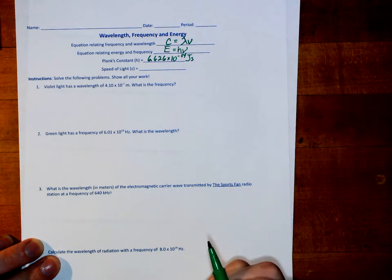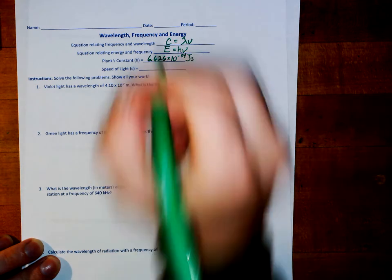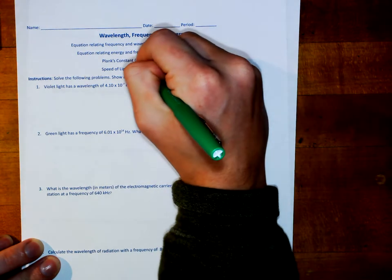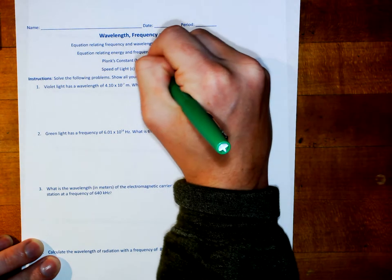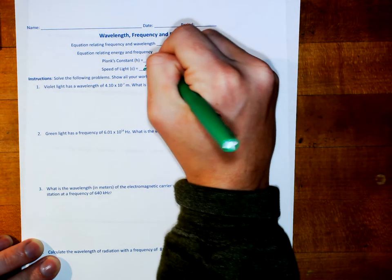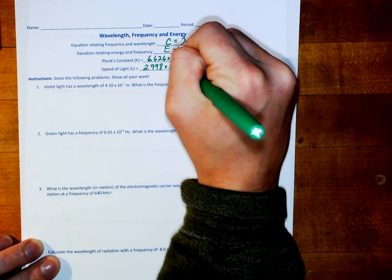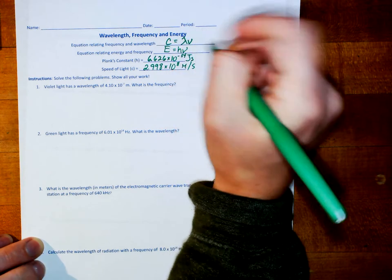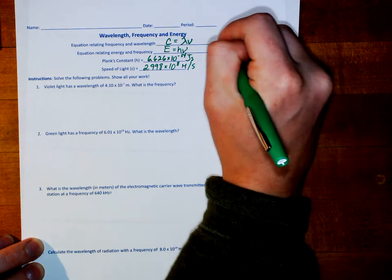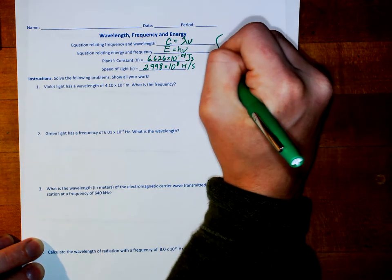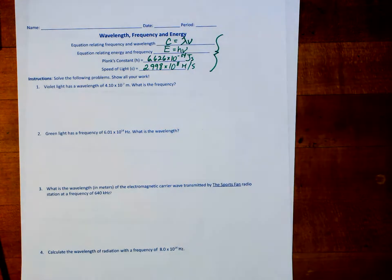And the speed of light, C, is 2.998 times 10 to the eighth meters per second. You will be given this information on a quiz — you'll be given the two constants and the two equations. You just need to know how to use them.